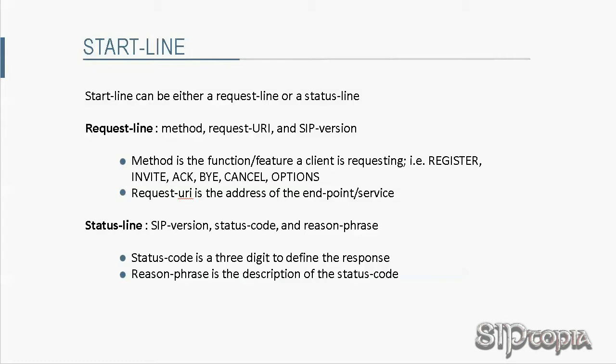The method in the request line is simply the function or feature a client is requesting — those most commonly used ones being REGISTER, INVITE, ACK, BYE, CANCEL, and OPTIONS. The request URI is the address of the endpoint or service. The status code in the status line is a three-digit number used to define the response for machines, while the reason phrase is the associated description of that status code for human users.